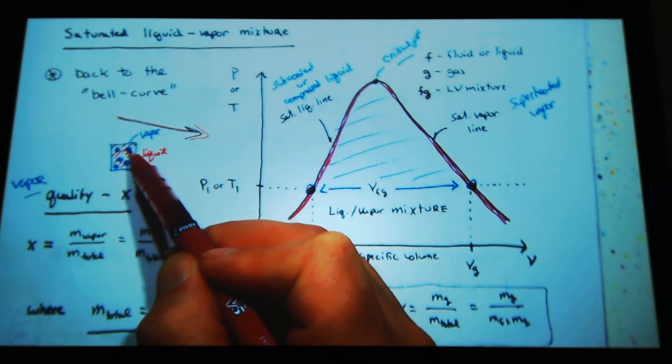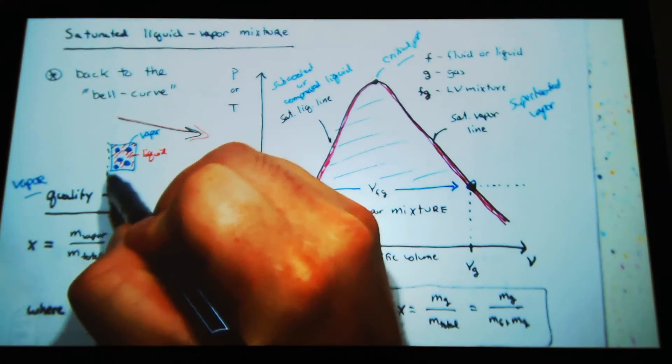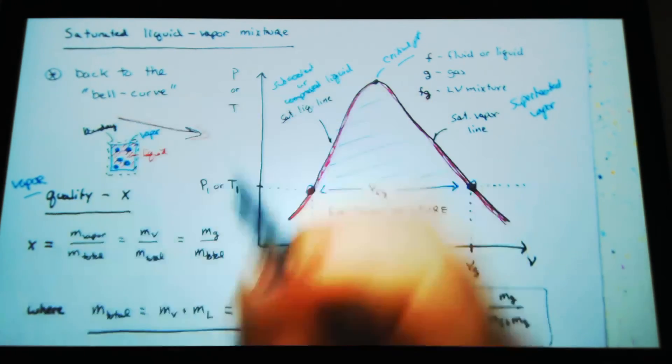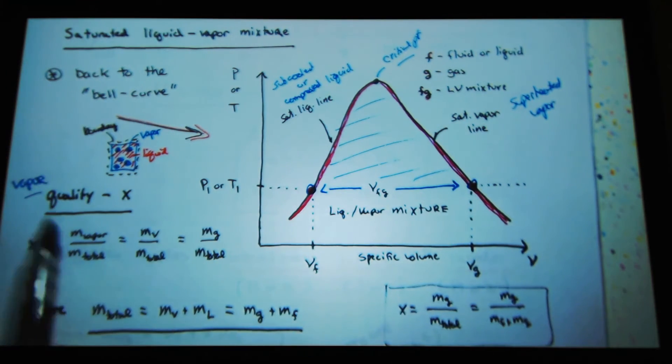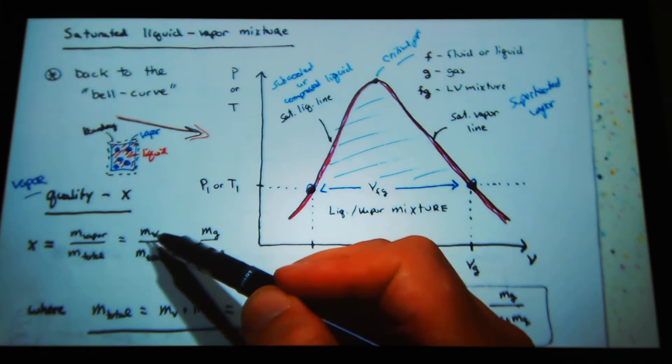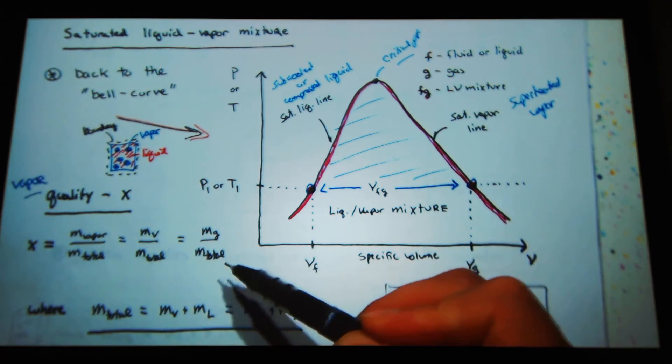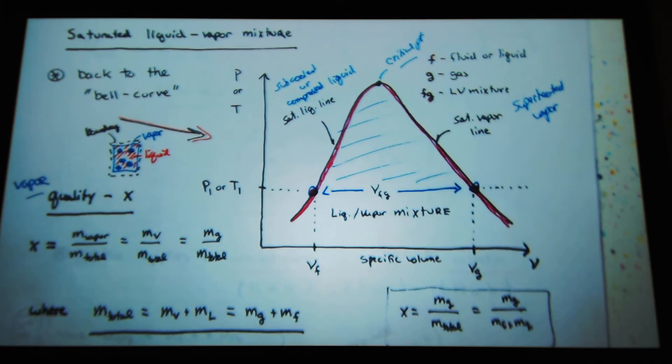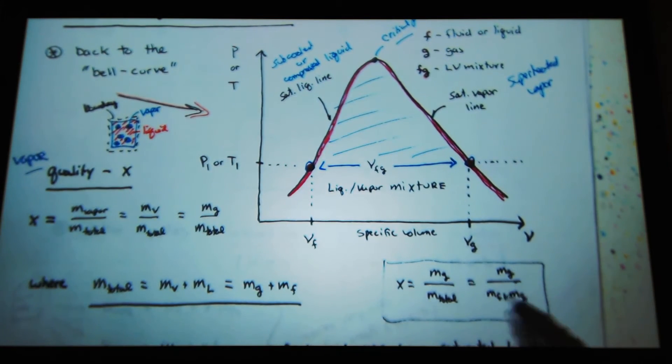I can get the mass of all the vapor. I'm just doing this for illustration purposes that I have a mixture of liquid and vapor. So I could get the total mass of vapor within my system. Given I drew a system, I can get the total mass of vapor within my system divided by the mass of the vapor plus the liquid. So I could write it as mass vapor over mass total, or mass gas over mass total. Mass total is just the mass of vapor plus the mass of liquid, mg plus mf.